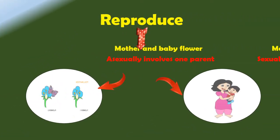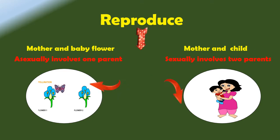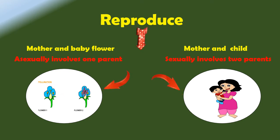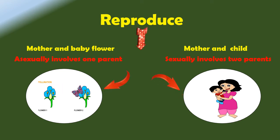Next we have reproduction. Plants and animals both reproduce, but they reproduce differently. For plants, they can reproduce both sexually and asexually, while on the other hand animals reproduce sexually.